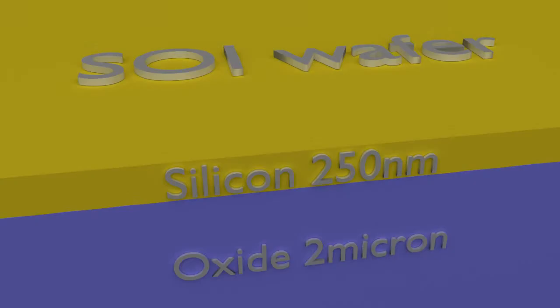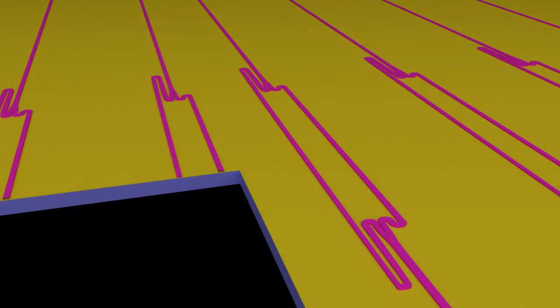Our device is fabricated using silicon on insulator substrate with 250 nanometer thick silicon device layer. First, the photonic structure consisting of an asymmetric Mach-Zehnder interferometer was defined by e-beam lithography followed by partial deep reactive ion etching of silicon.